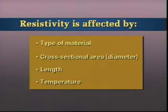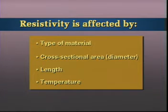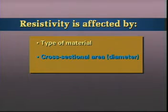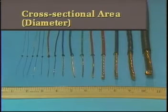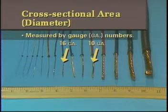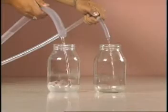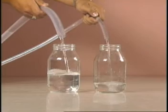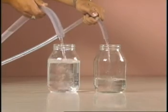It isn't just the type of material that affects current flowing in a wire. A material's resistivity, its ability to oppose current flow, is actually determined by four major factors. The first factor is the type of material. Next is the cross-sectional area or diameter of a wire. Wire diameter or cross-sectional area is measured by gauge numbers. Number 10 wire has approximately twice the cross-sectional area of 16-gauge wire. If these wires were water pipes, the 10-gauge size would carry twice as much water since it is twice as large.